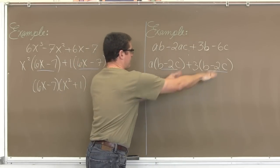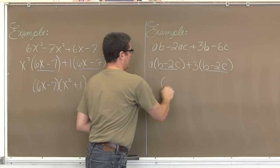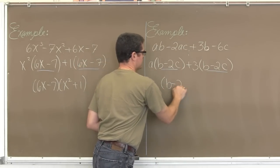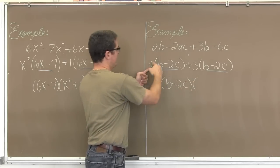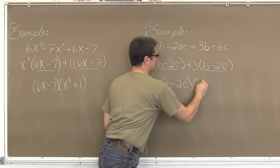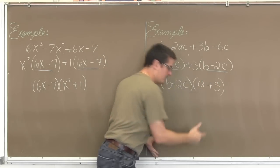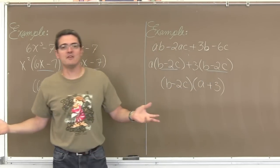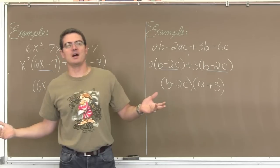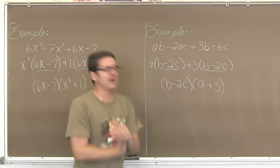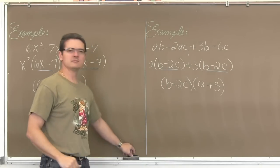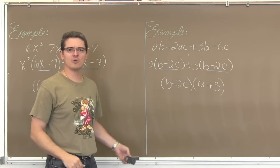We factor out b minus 2c, and we have a plus 3. So the final answer is b minus 2c, times the quantity a plus 3. That is the end of the video. I am Mr. Tarrou — go do your homework.